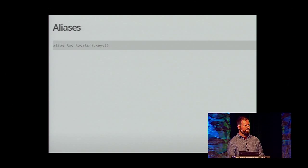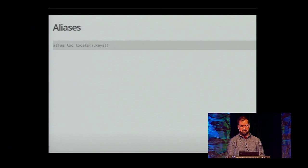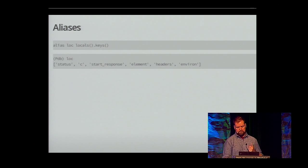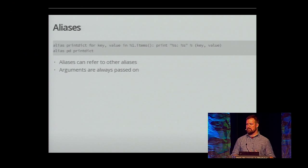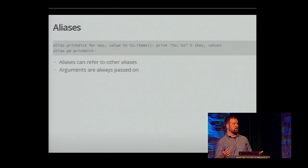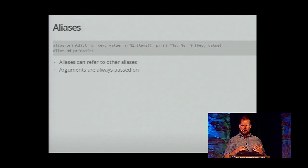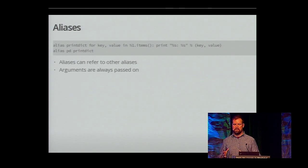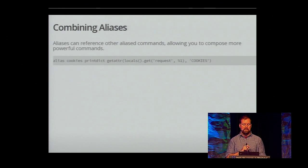Another one I use is LOC for locals. There's args and whatever in PDB by default, but knowing what the state is — especially when I'm going up and down the stack — is particularly useful. Aliases can also refer to other aliases. So if I have a print-and-dict alias, I could alias that to PD. My PD alias doesn't specify %1 — all those arguments get passed on automatically. You can start composing things.